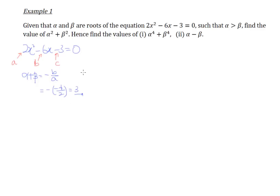Similarly, according to what we discussed earlier, alpha times beta, which is the product of roots, is equal to C over A. In this particular case, our product of roots gives us negative 3 over 2. So the sum of roots is 3 and the product of roots is negative 3 over 2.